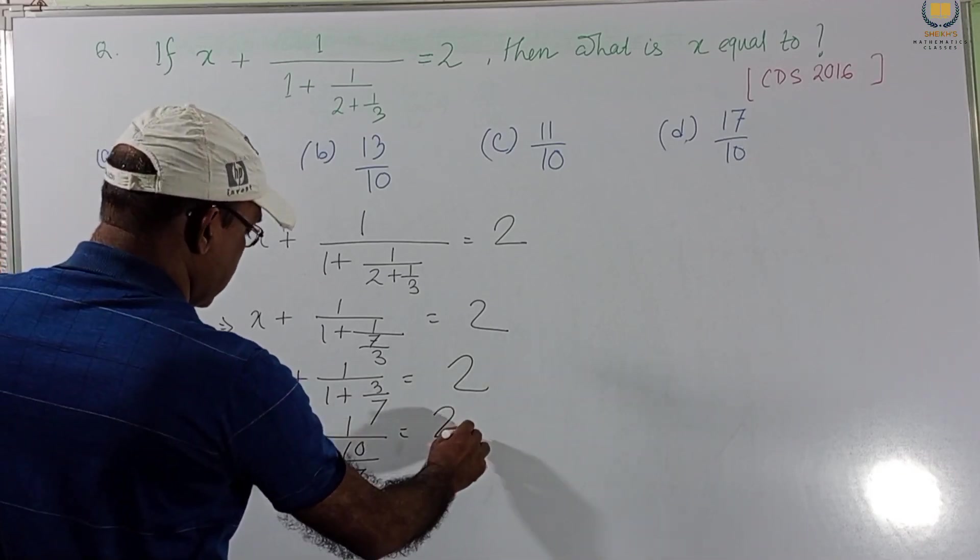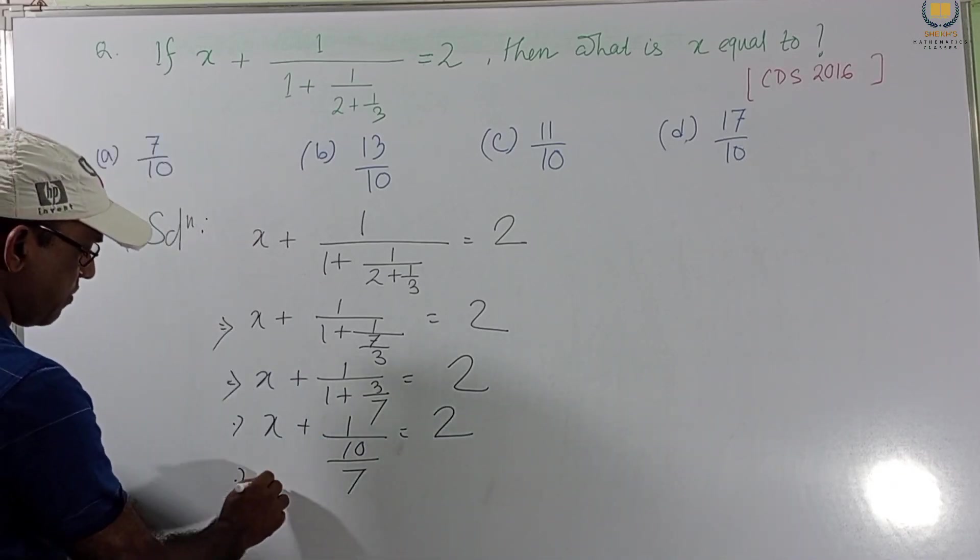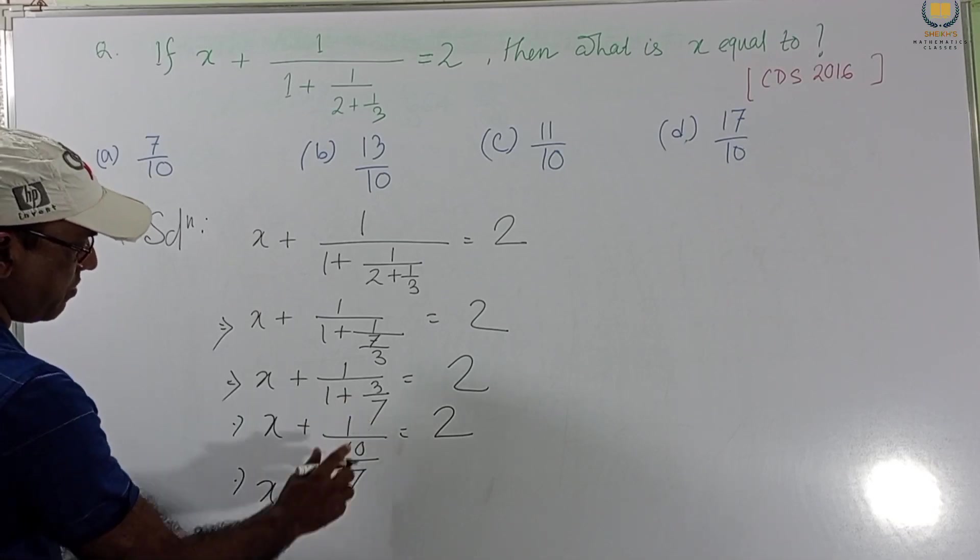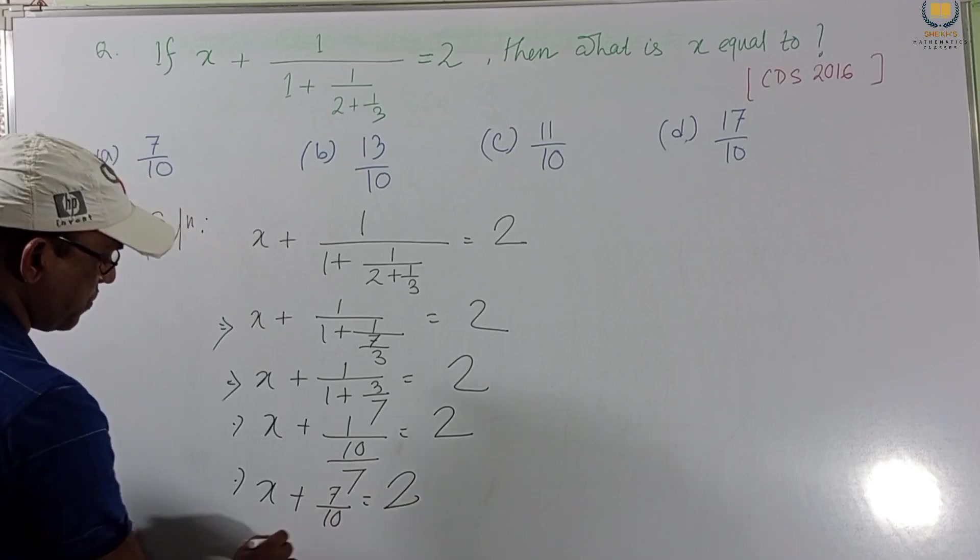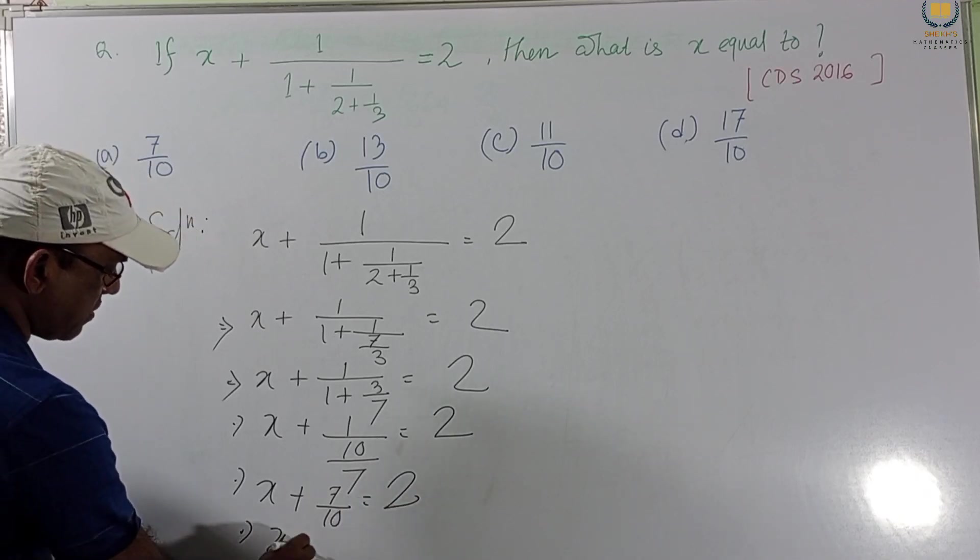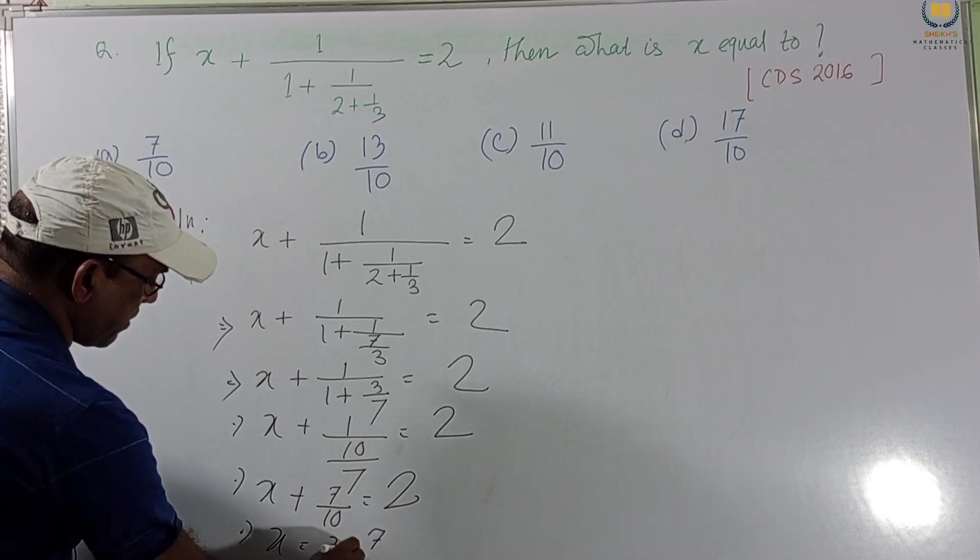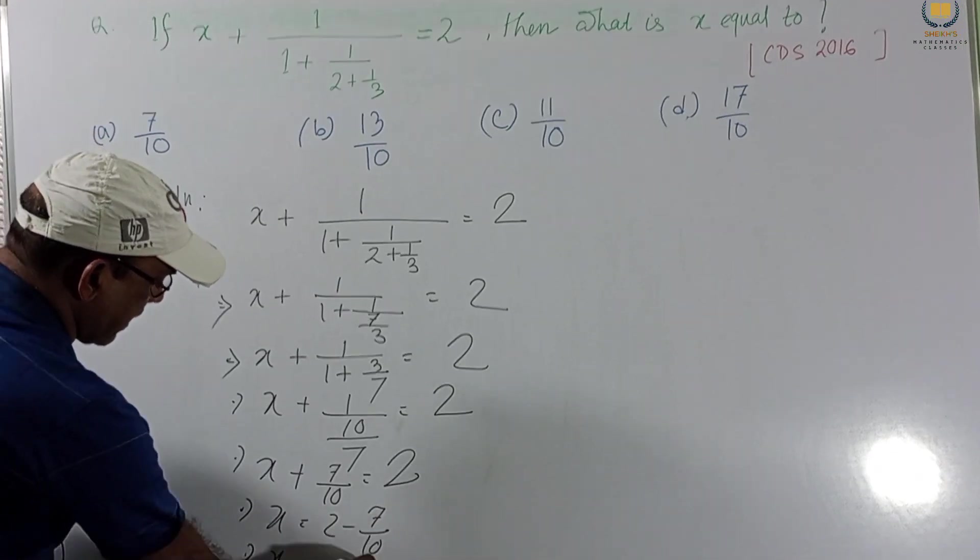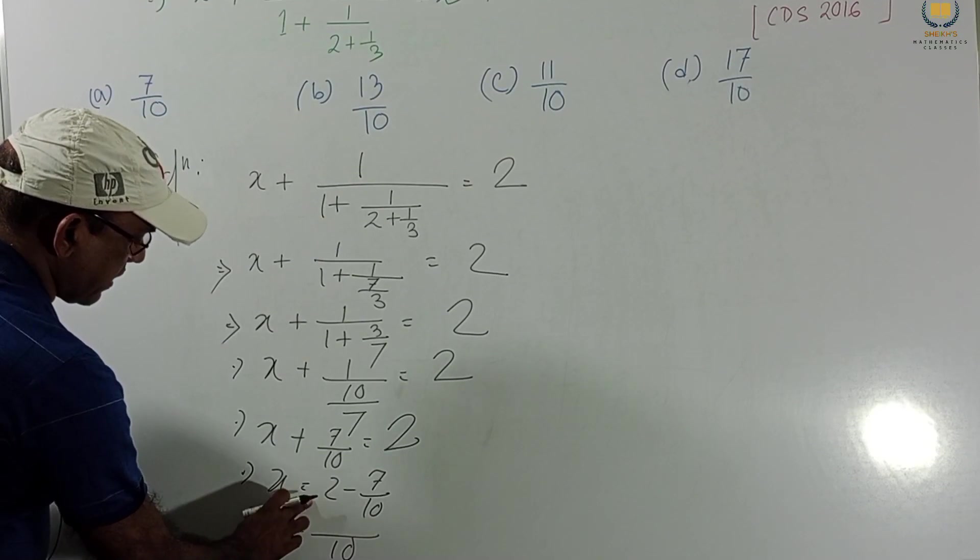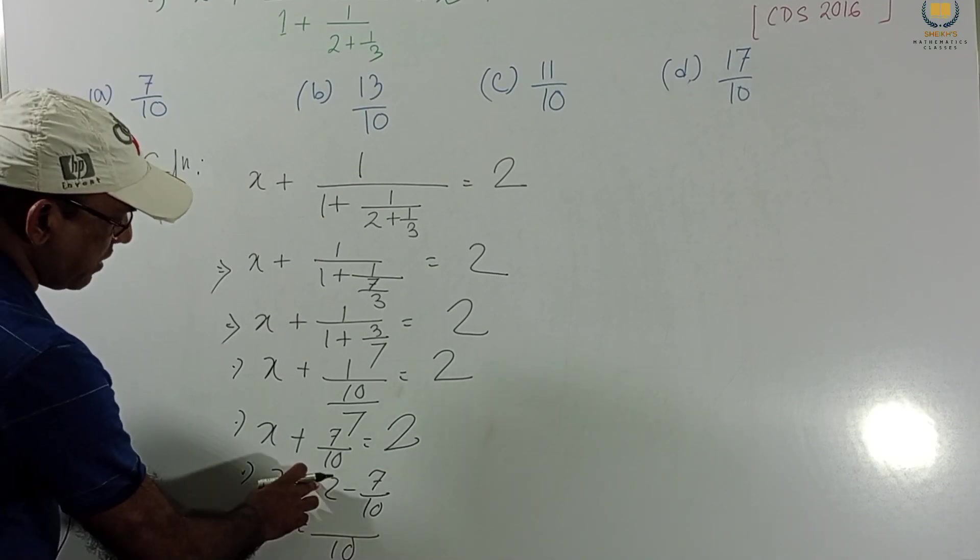We get this. And this will be 7 becomes in numerator, 7 by 10 equal to 2. So, X equal to 2 minus 7 by 10 and 10 taking LCM. If we taking 10 LCM, then 20 minus 7,